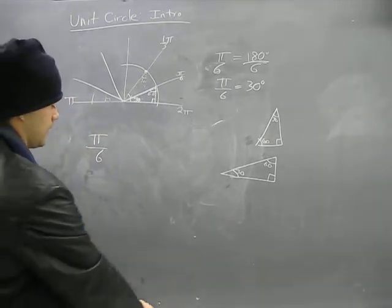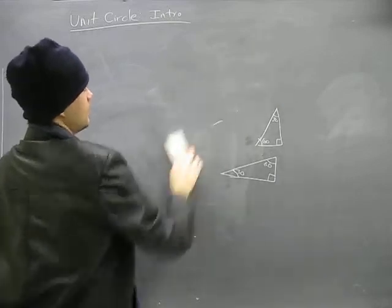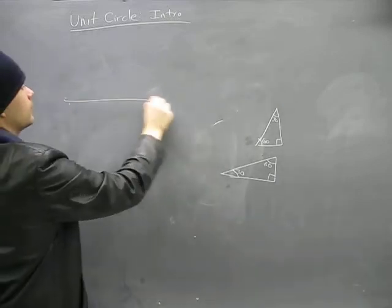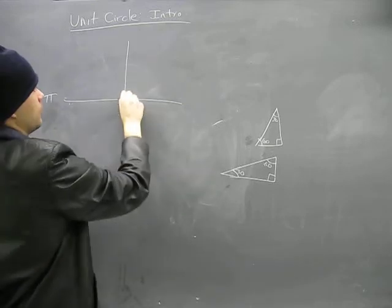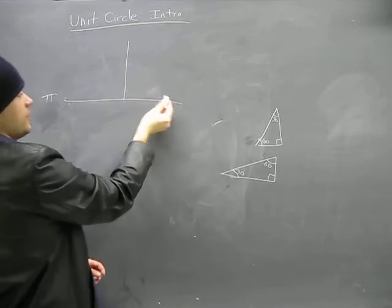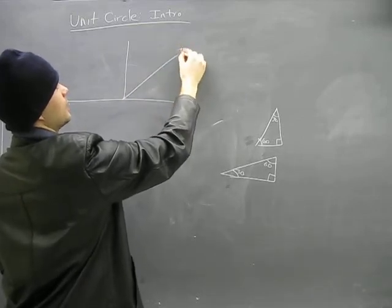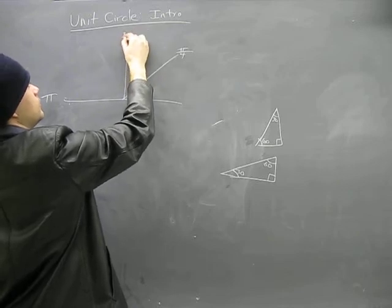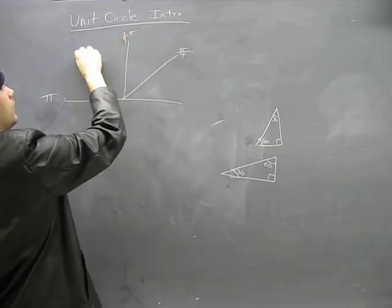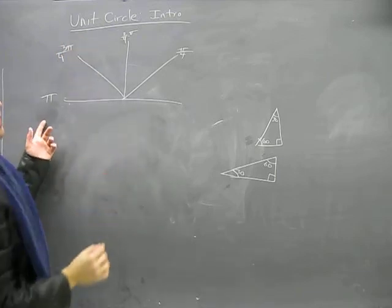Now the last one I'm going to show you, because I'm going to have a big mess here, is pi divided by 4. This is the other common one here. If we take the distance of pi and divide it into four spots, so there's pi over 4. This would be 2 pi over 4. This would be 3 pi over 4.